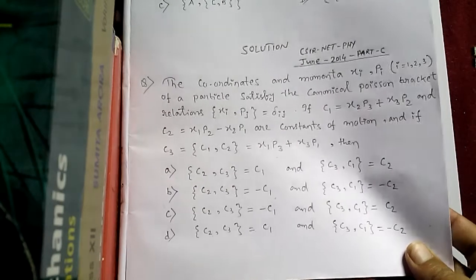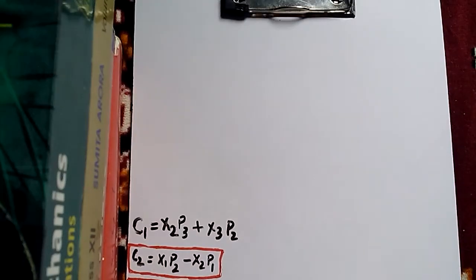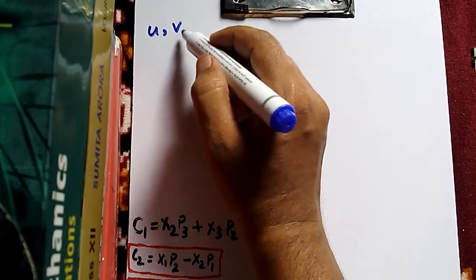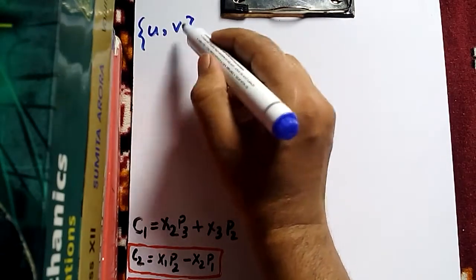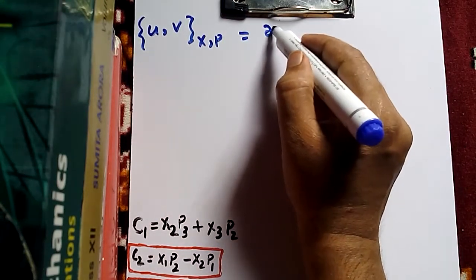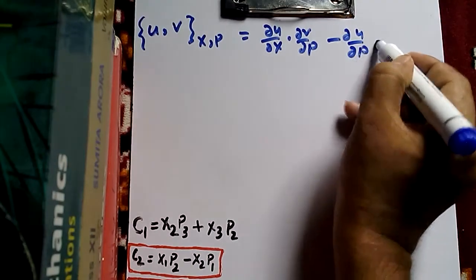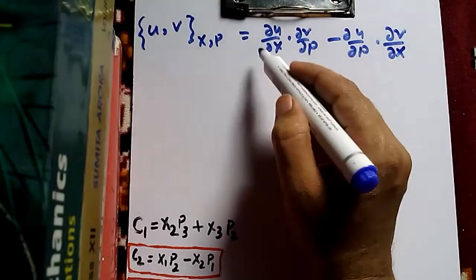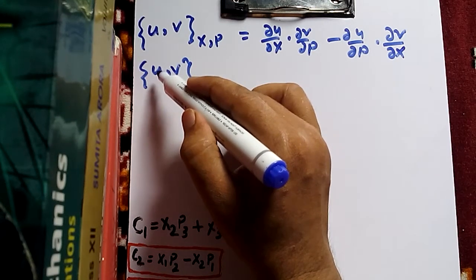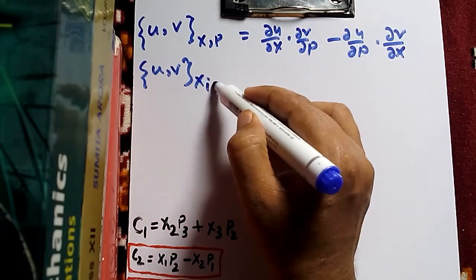Let us try to solve this problem. For convenience we have already written the three given functions C1, C2, C3. Now we see that for two functions U and V, where U is a function of position and momentum and V is also a function of position and momentum and they are independent of each other, their Poisson bracket with respect to X and P is given by del U/del X dot del V/del P minus del U/del P dot del V/del X.